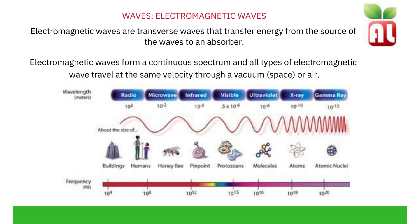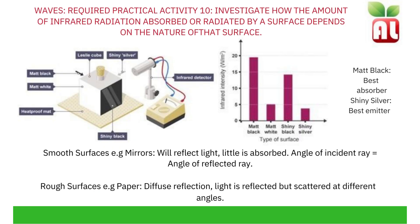The visible light range is the only wavelength range in which the human eye can see. This light can be split by a prism into different colours, which is why we see different colours of light — they are different frequencies or wavelengths of light. Red has the longest wavelength and violet has the shortest wavelength. Investigate how the amount of infrared radiation absorbed or radiated by a surface depends on the nature of that surface — required practical.